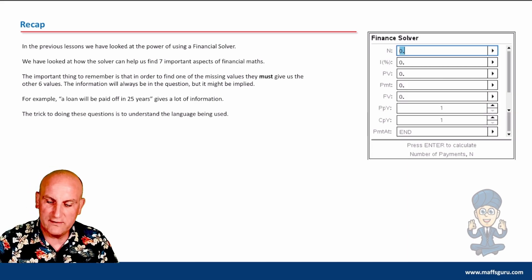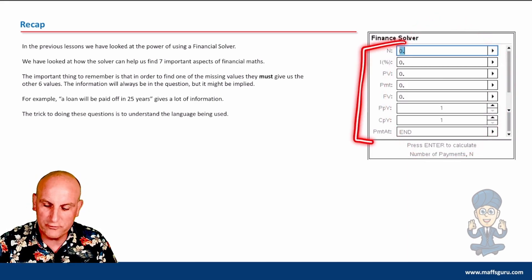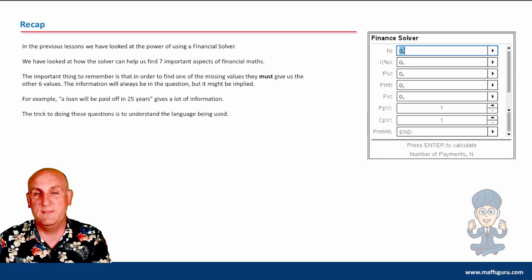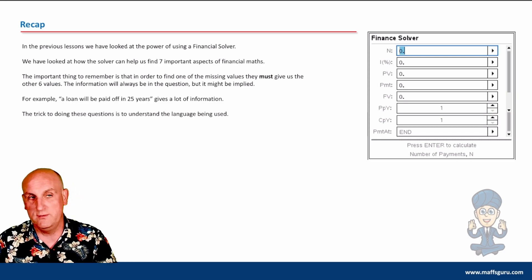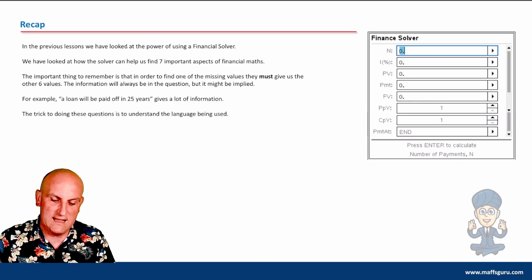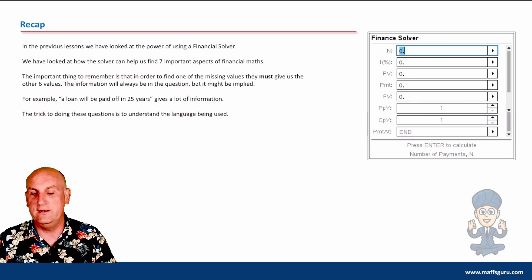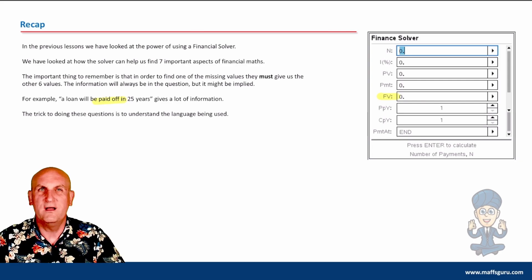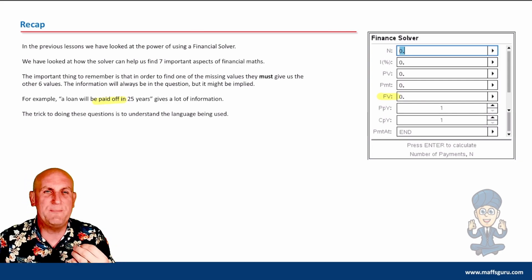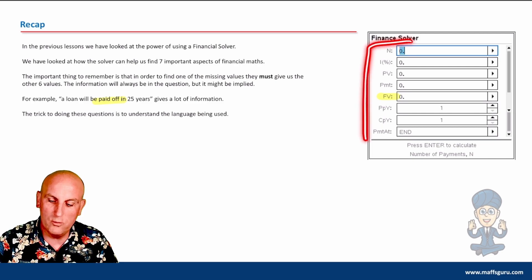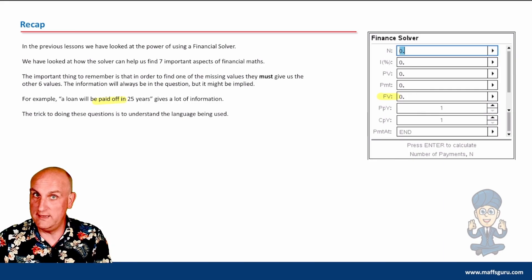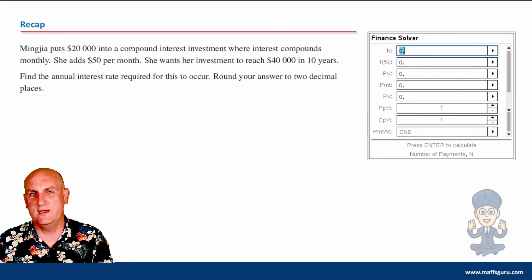In the previous video we looked at the financial solver — I introduced what all the fields meant and how we could read the question. Context was really important. If you haven't watched that video, I can't recommend it highly enough. The key point is: when a loan will be paid off in 25 years, the phrase 'paid off' tells me the future value is zero. They'll give you an interest rate, a principal value, payments per year, and remember we need six of the seven pieces of information.